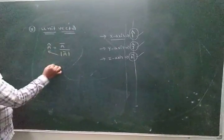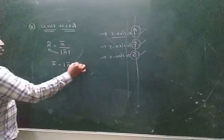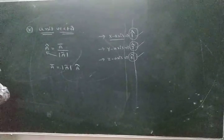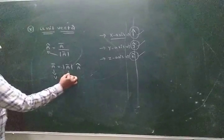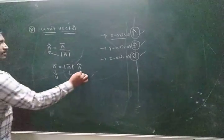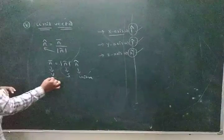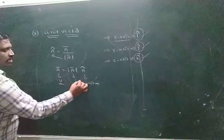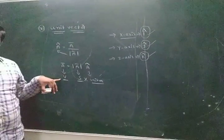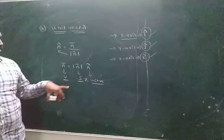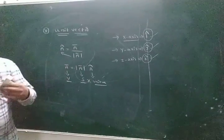According to this, ā can be written as modulus of ā multiplied by a_cap. Here, ā is a vector, the magnitude of a vector becomes a scalar, and a_cap is the unit vector. Simply: a vector can be written as a scalar multiplied by a unit vector.